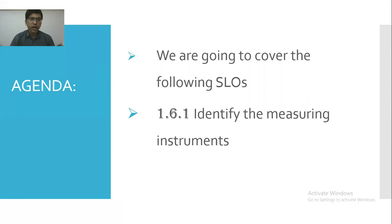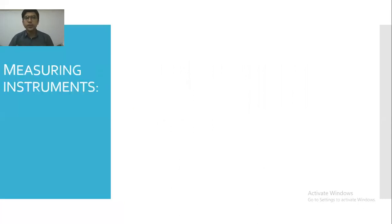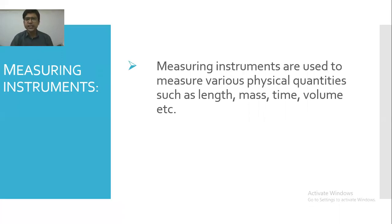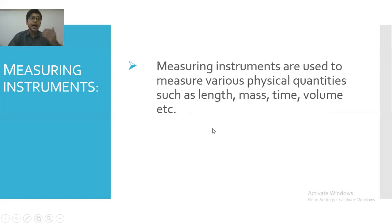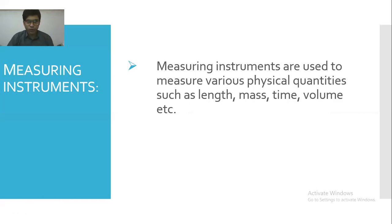First, we will look at the definition of measuring instruments. As the name indicates, measuring instruments are used to measure various physical quantities such as length, mass, time, volume, etc. The instruments that we use to measure these quantities are called measuring instruments.